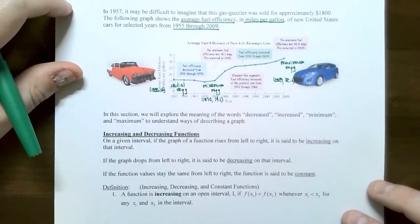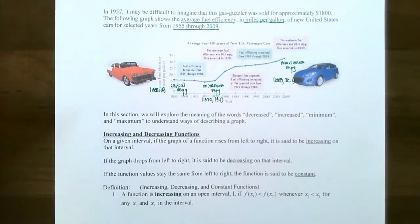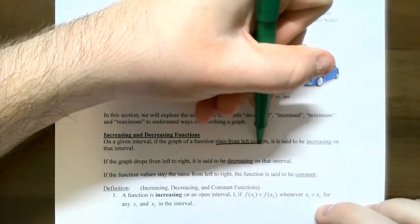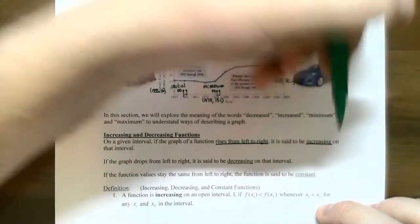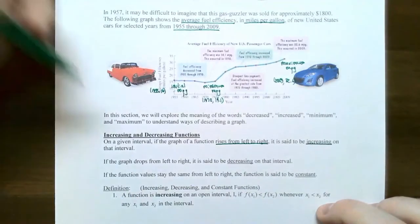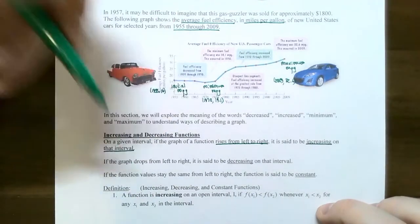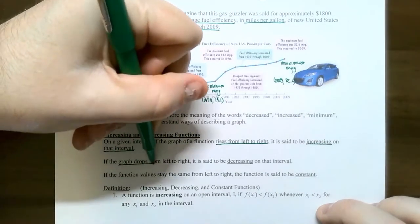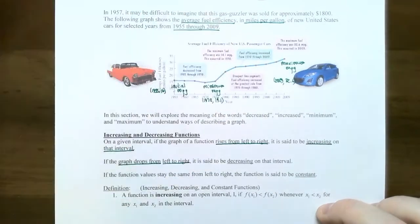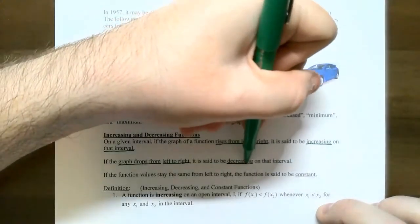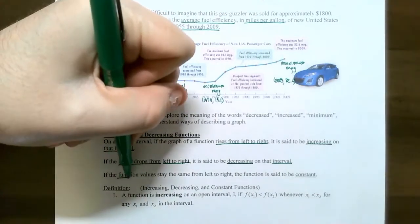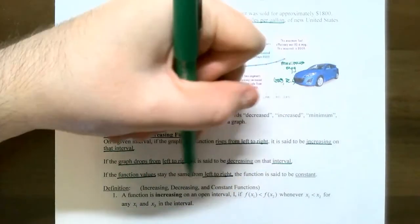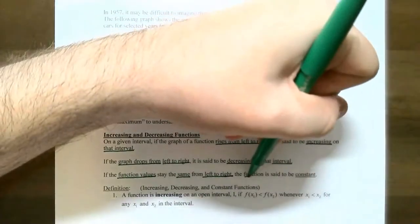Let's look at the definition of increasing and decreasing. On a given interval, a graph might be rising from left to right — you always read a graph from left to right — and if it's rising, then the function is increasing on that interval. If the graph drops or falls from left to right, the function is decreasing. And if the y-values stay the same going from left to right, then the function is constant.